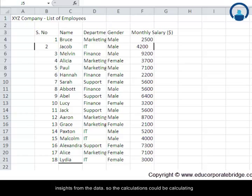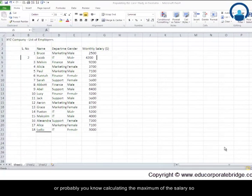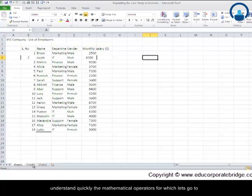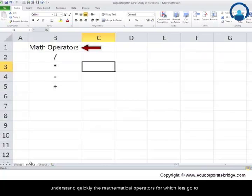So the calculations could be calculating average salary, maybe calculating the number of males in XYZ company or probably calculating the maximum of the salary. So calculations can be of various types but before we do that let us understand quickly the mathematical operators. Let's go to sheet 2.